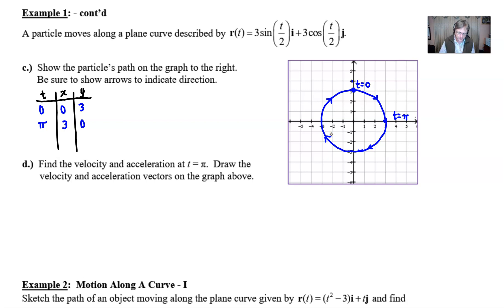Now for part d this is where you're going to be doing something a bit different. Find the velocity and acceleration at time π and then draw those velocity and acceleration vectors. If you recall, we already found the velocity and we're going to evaluate that velocity at π. Our velocity was 3 halves cosine of t over 2, so we're going to have 3 halves cosine π over 2.